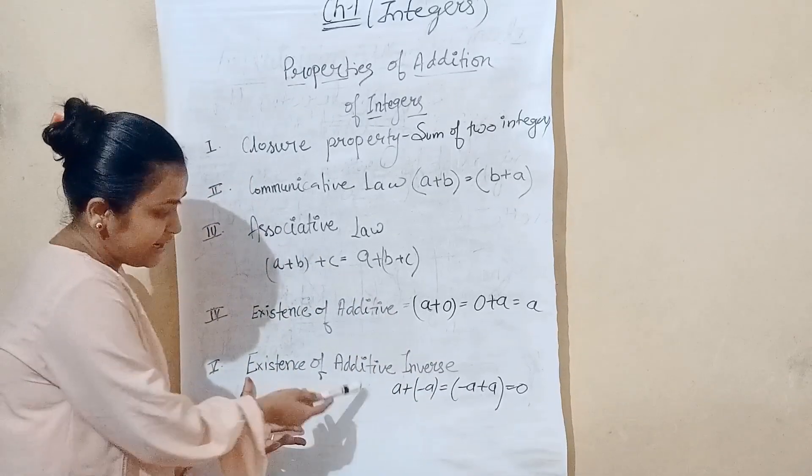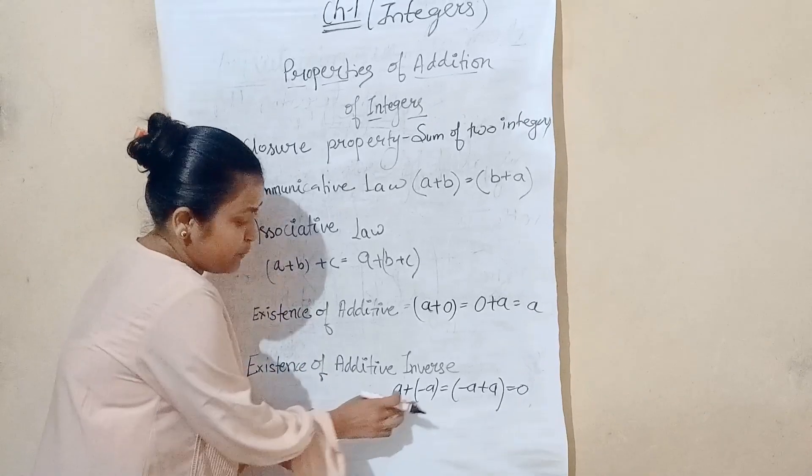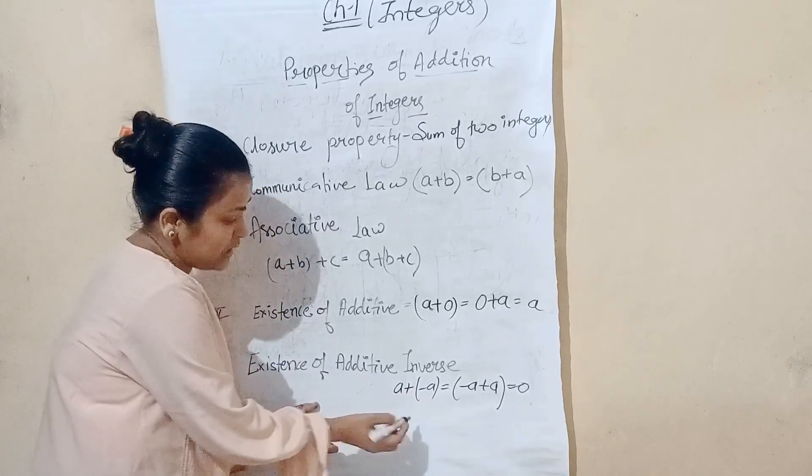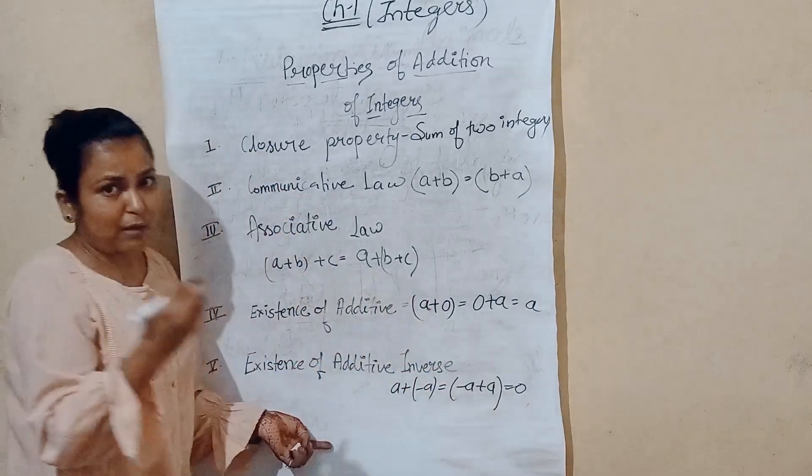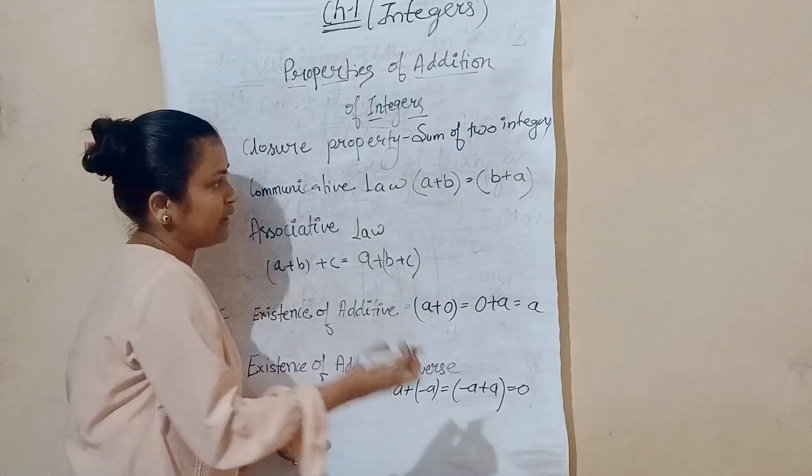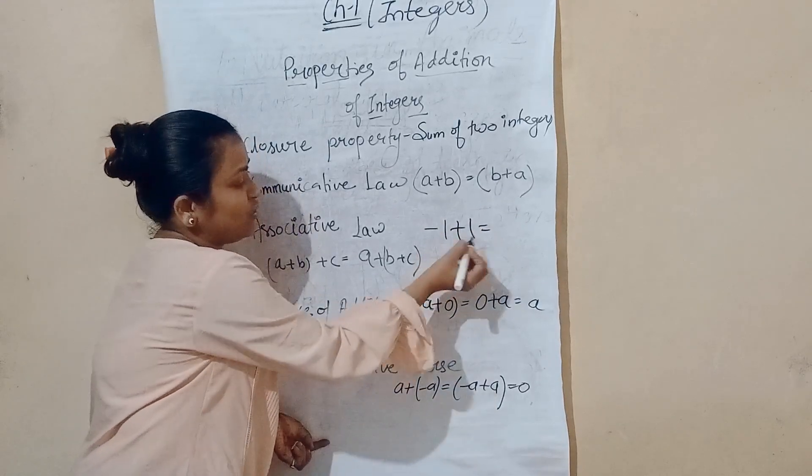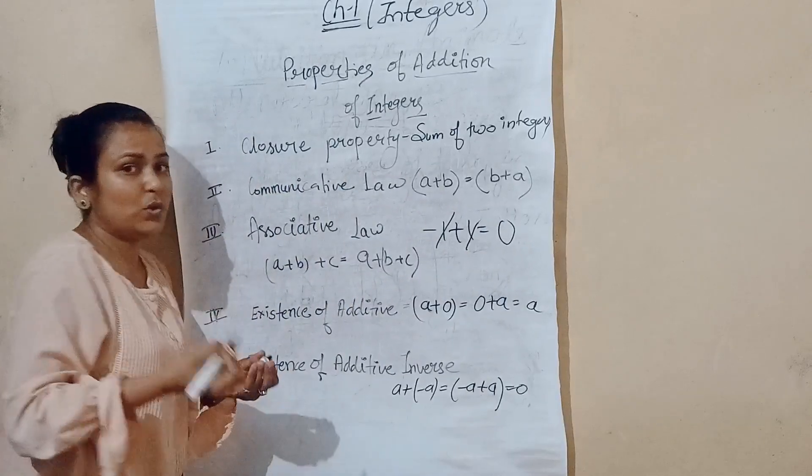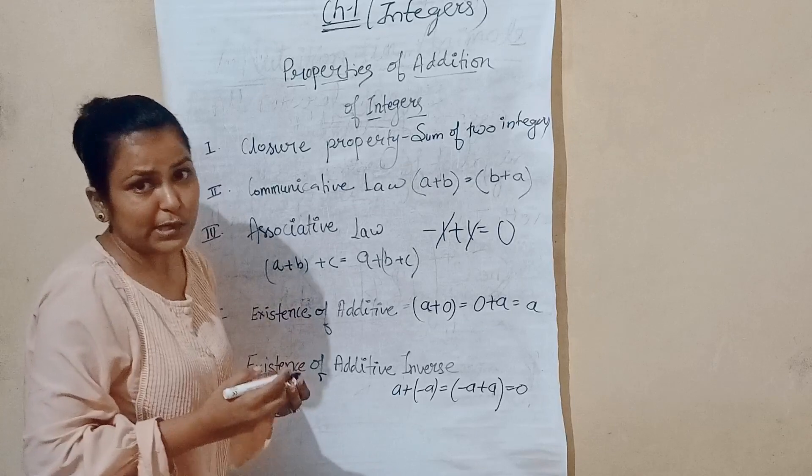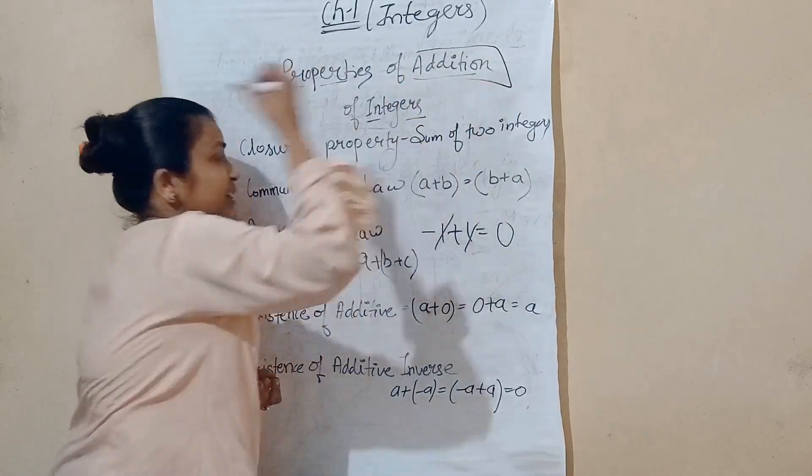Last, existence of additive inverse. This is the value of A, just opposite. A plus minus A. We have a bracket. We will open it. If we add minus A plus A, then we will get zero. So, minus 1 plus 1, we will get zero. These are the five properties. They are most important for solving addition of integers.